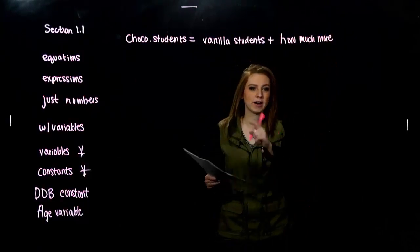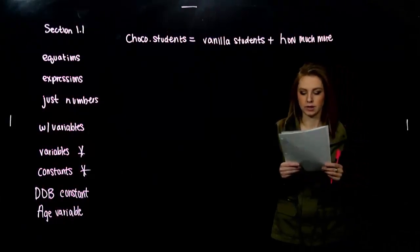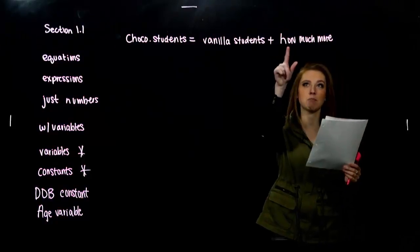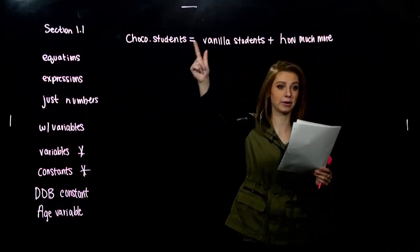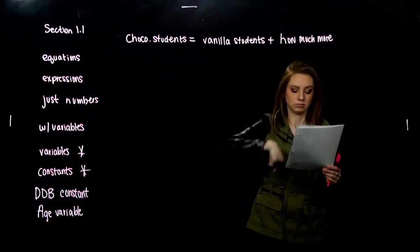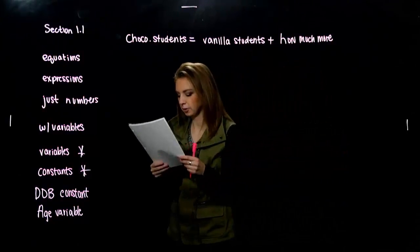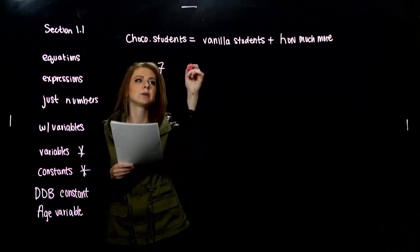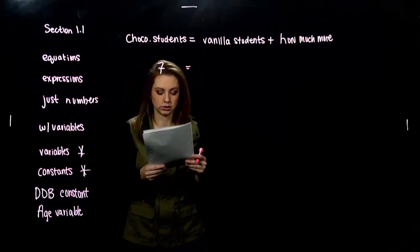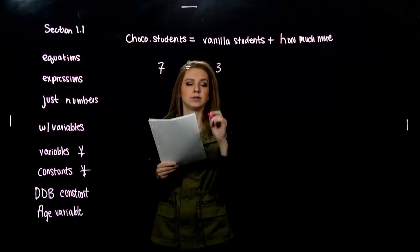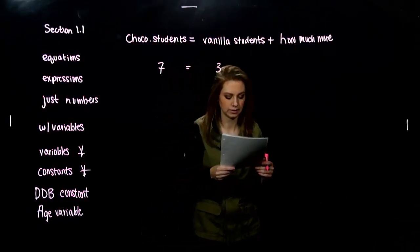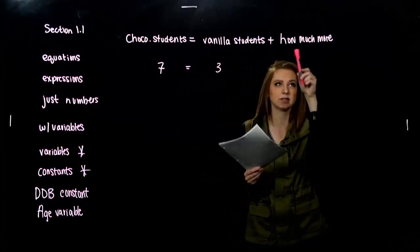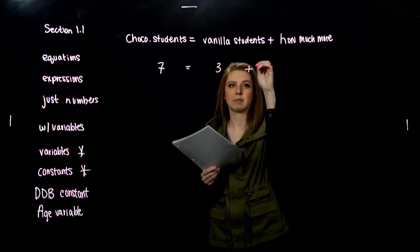Oftentimes, when we're writing out or building algebraic equations, we're just going to have to parse the sentence into what are we discussing. How many more students like chocolate better than vanilla? So we can see, being able to read the graph, how many students like chocolate? I've got seven of those. So we can fill in the constants that we know. Another constant is the vanilla, number of vanilla students, three of them like vanilla. And how many more students like chocolate better than vanilla? This is our unknown. This is our variable. So I'm going to call it x.